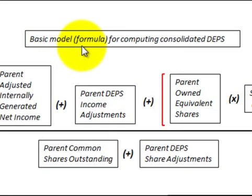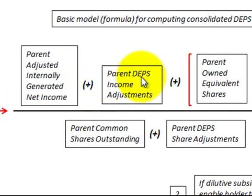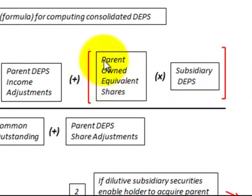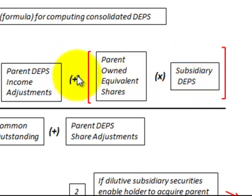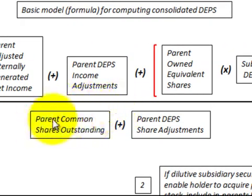Now let's look at the formula for computing the consolidated diluted earnings per share. We start with the parent's adjusted internally generated net income, then add the parent's diluted earnings per share income adjustments. Then we add the quantity: the parent's owned equivalent shares of the subsidiary times the subsidiary's diluted earnings per share. We divide all of this by the parent's diluted earnings per share share adjustments.